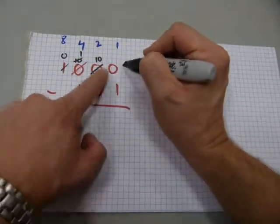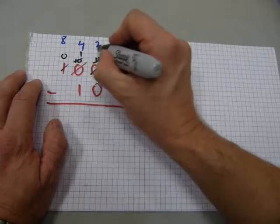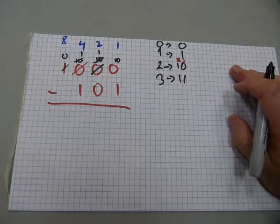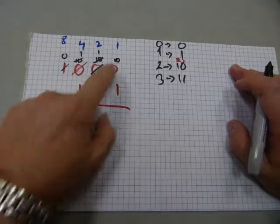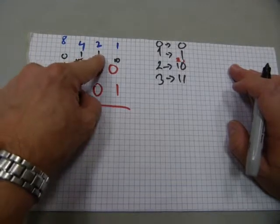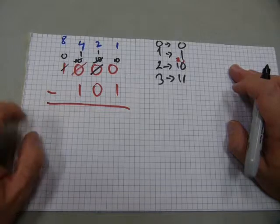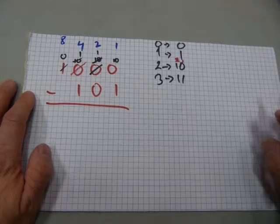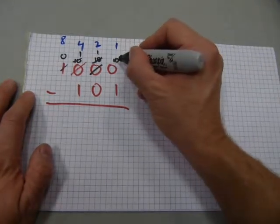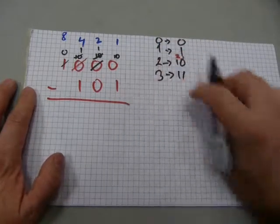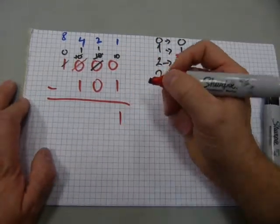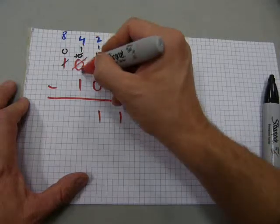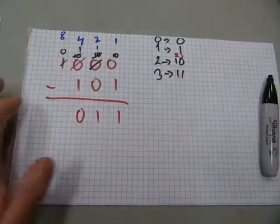That works for the fours column, but I still need something in the ones column. So instead of two twos, I'll keep one two and convert the other into two ones. That gives us four plus two plus one plus one, which is still eight total. Now we can subtract: two minus one is one, one take away nothing is one, one take away one is zero. That's the answer.